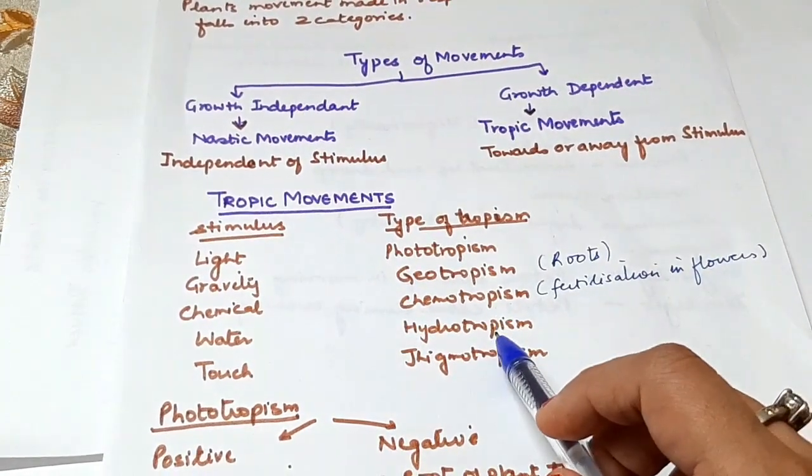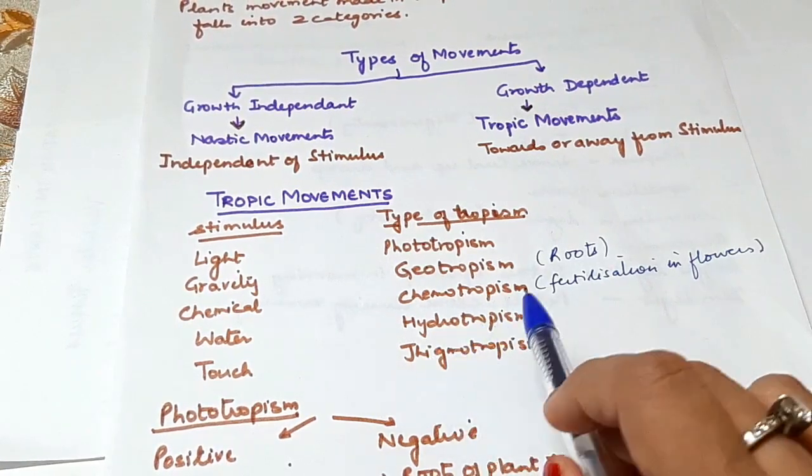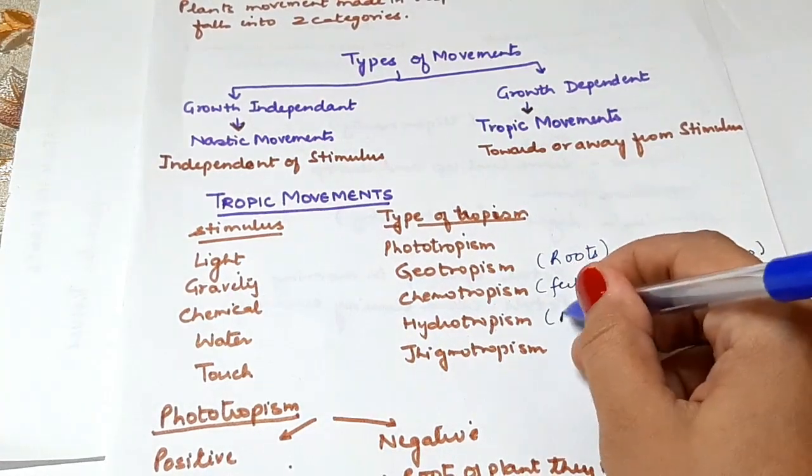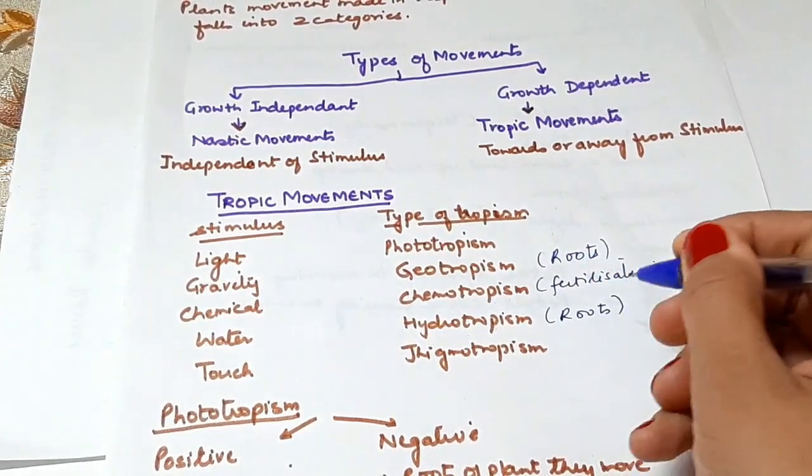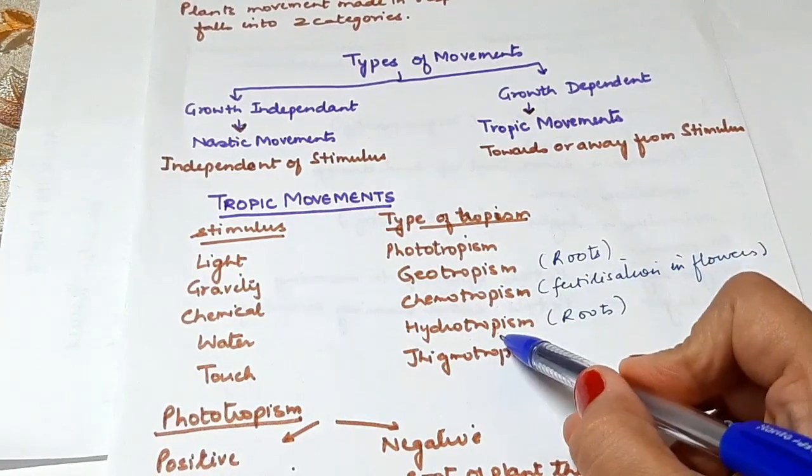Next is hydrotropism - in this case, the plant moves towards water. We can take the example of roots, which always grow towards water. So roots are positively hydrotrophic.